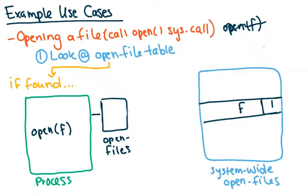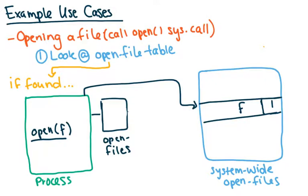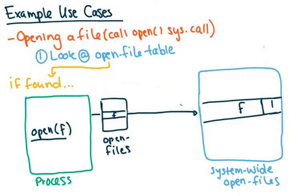The second use case is opening a file via the open system call. The first thing you do is look at the system-wide open file table to see if the file is already open. If it is there — maybe it's already being used by another process — then what we do is create an entry in the per-process open file table and point it to the system-wide entry. This pointer is going to be really important, and I'll show its use in other examples.